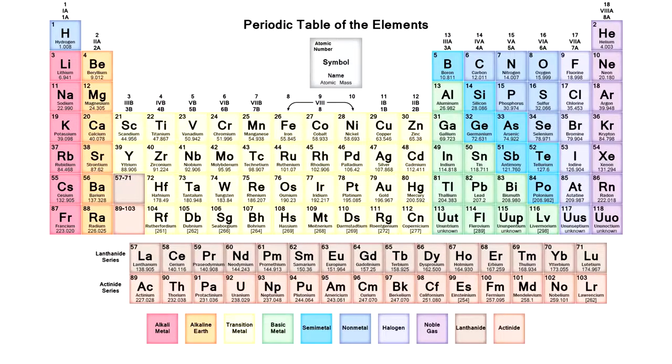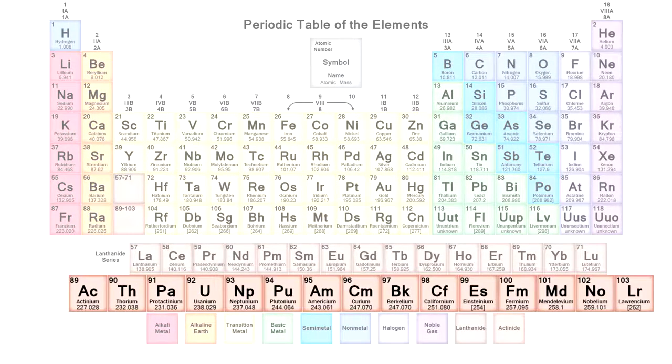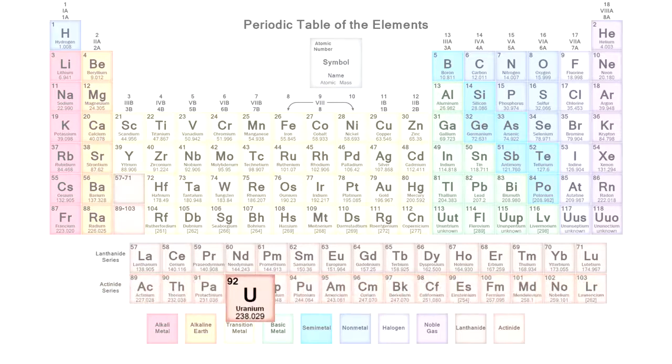I think now we've settled everything and can move on to considering properties of the most dangerous metal on Earth, uranium. Uranium belongs to the actinide series in the periodic table, radioactive elements, and its atomic number is 92.